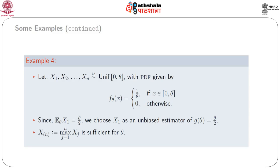We consider the last example. Let x₁, x₂, …, xₙ be iid Uniform(0, θ) random variables. The pdf is f_θ(x) = 1/θ if x ∈ (0, θ), and 0 otherwise. We consider g(θ) = θ/2. Since E(x₁) = θ/2, we choose x₁ as an unbiased estimator of g(θ). We know that X₍ₙ₎ = max(x₁, x₂, …, xₙ) is sufficient for θ.